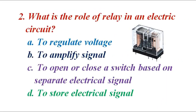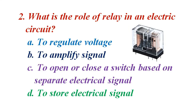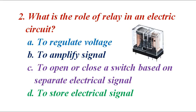What is the role of a relay in an electrical circuit? A. To regulate voltage. B. To amplify signal. C. To open or close a switch based on a separate electrical signal. D. To store electrical energy. The correct answer is C. To open or close a switch based on a separate electrical signal.